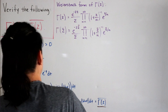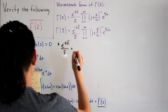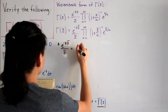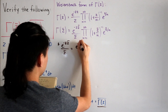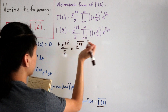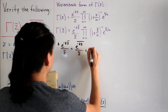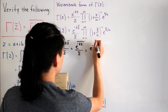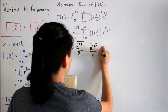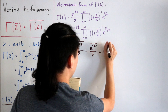Let's handle each piece one by one. For the first piece, e to the negative lowercase gamma times z-conjugate divided by z-conjugate: using conjugate properties, the exponent's conjugate gives us e to the power of negative gamma times z, and the denominator z-conjugate means the entire expression is just the conjugate of e to the negative gamma times z over z.